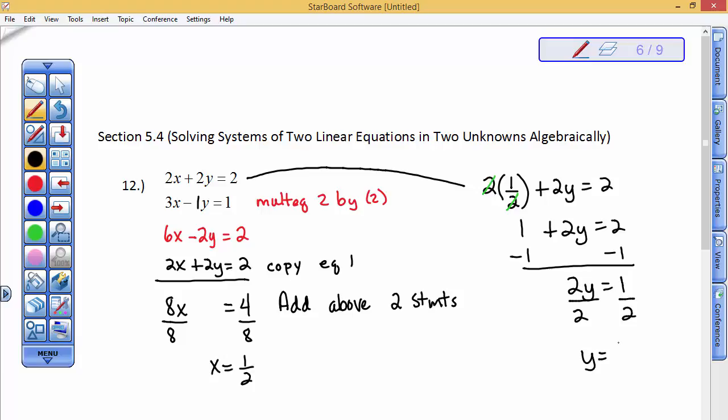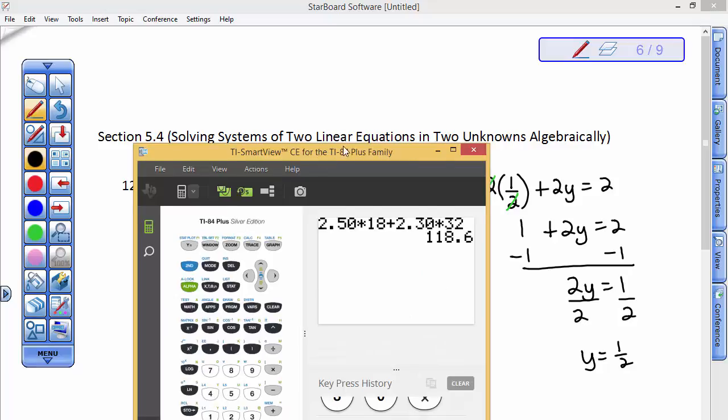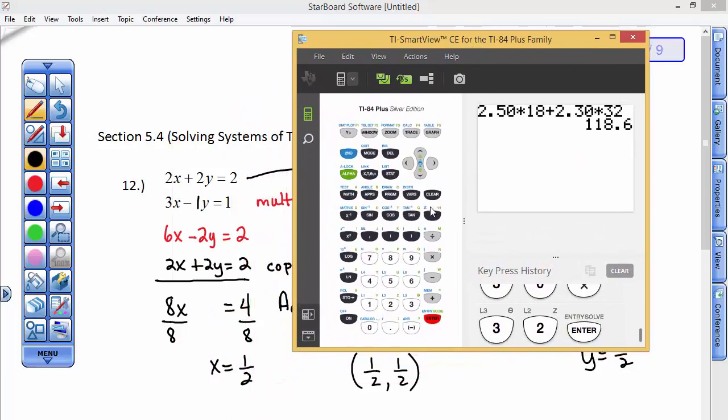If I wanted to check that on my graphing calculator, you know what I would probably do? I'd probably just type in over here, 2 times 0.5 because that's easier for a half, plus 2 times 0.5. And I want to see if that's equal to 2. And then the second equation, 3 times 0.5 minus 1 times 0.5. And I want to see if that's equal to 1. And I've done my checking. You don't have to show me the checking. You have to do it for yourself so you can say, Oh good, I'm really happy with my results.